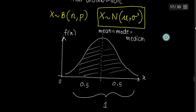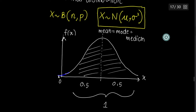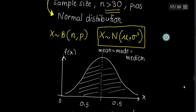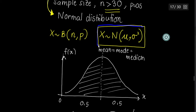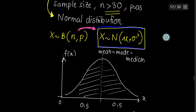Take note — the end parts of the bell curve will never touch the x-axis. They stay just above it. This is the notation used for this graph. So our entire calculation is now changing from binomial to normal.